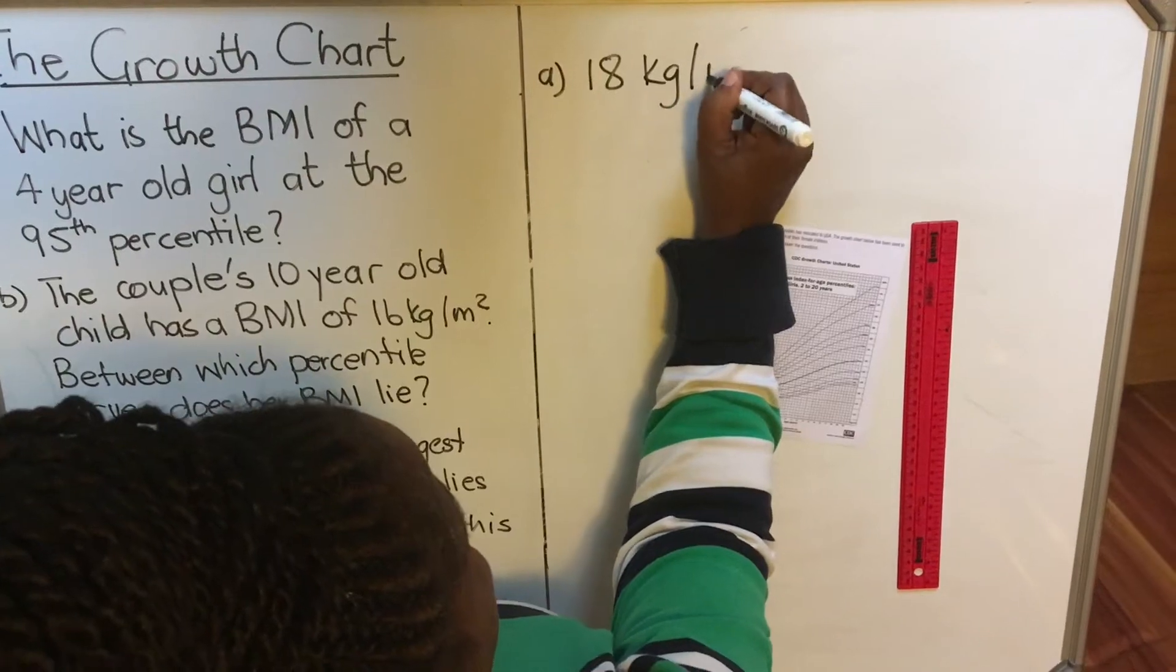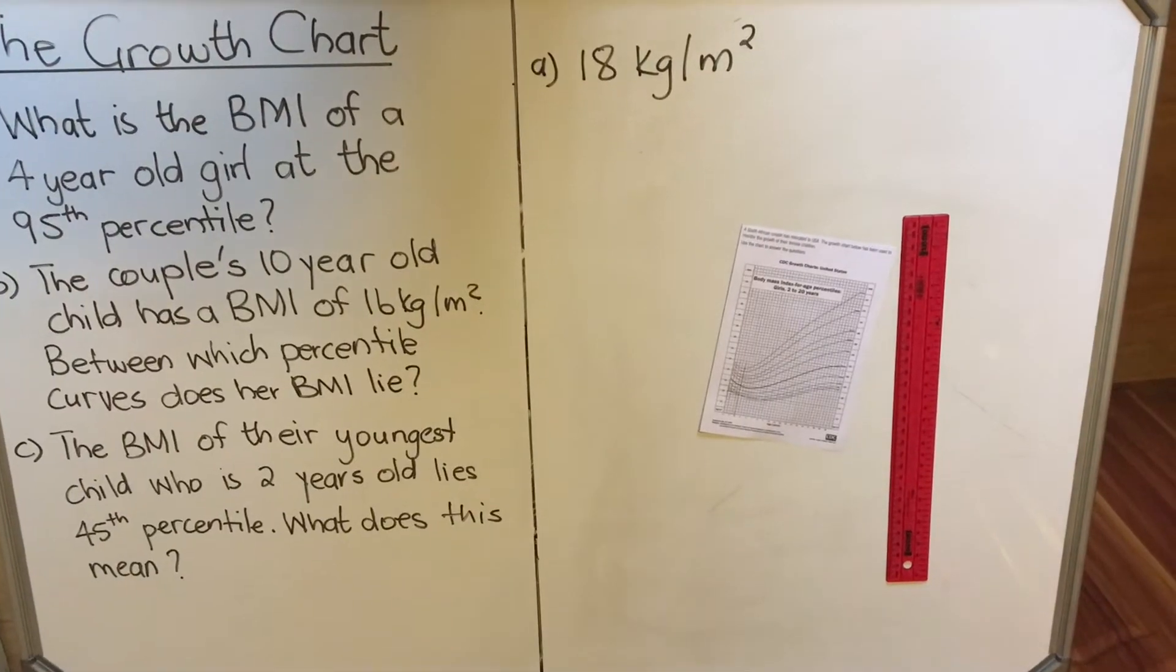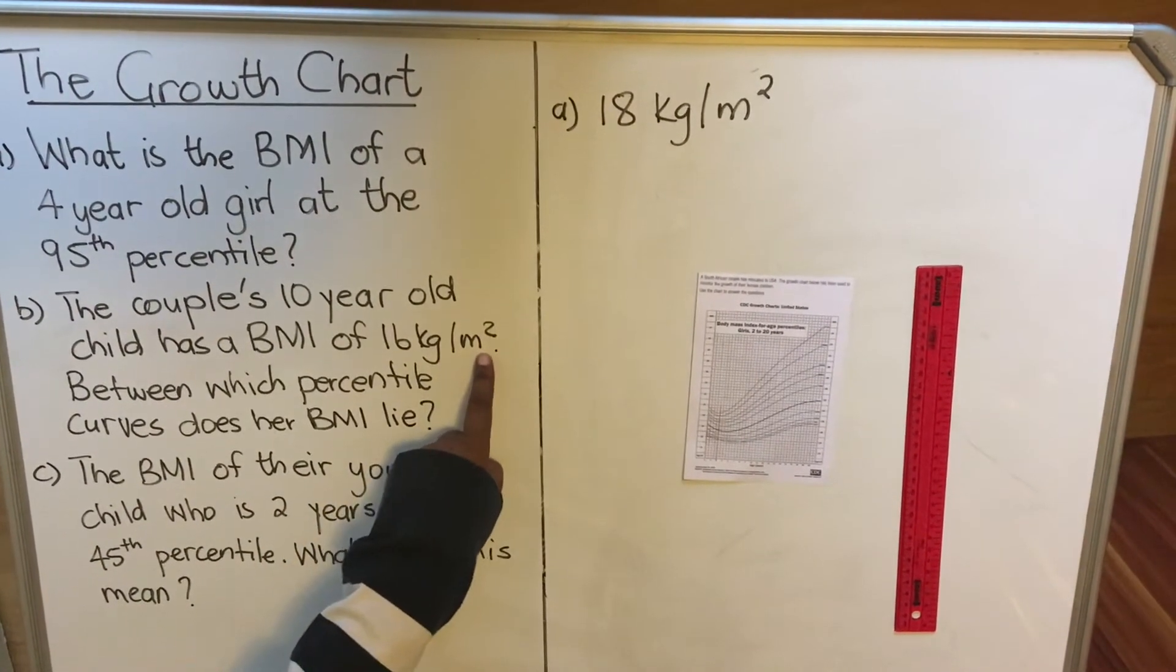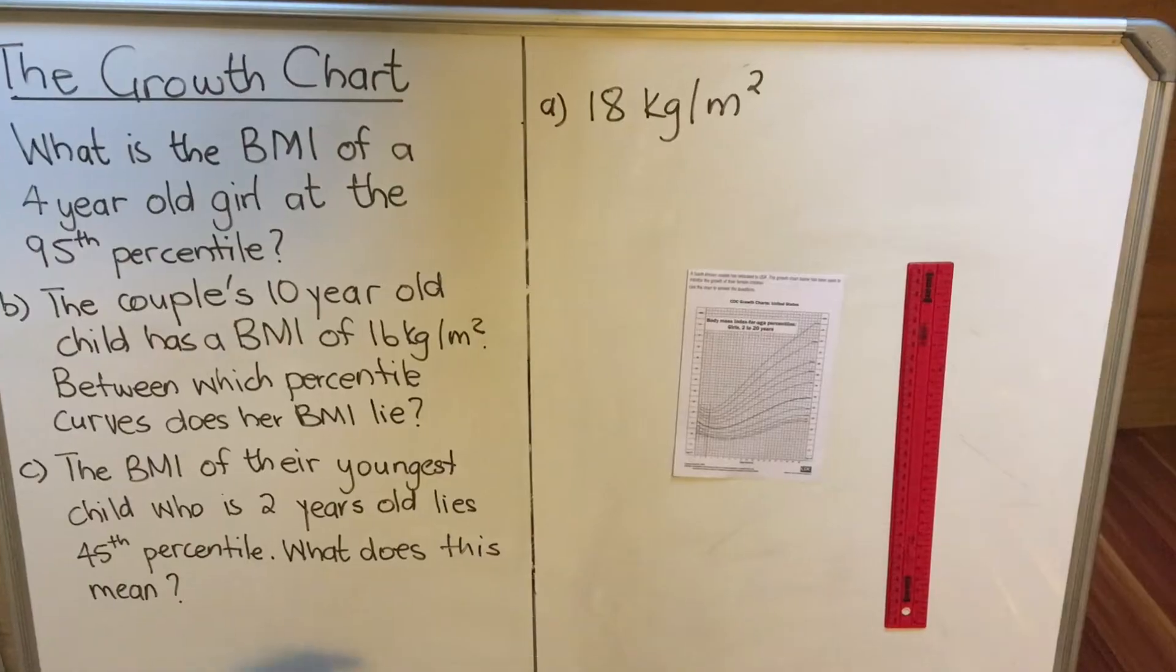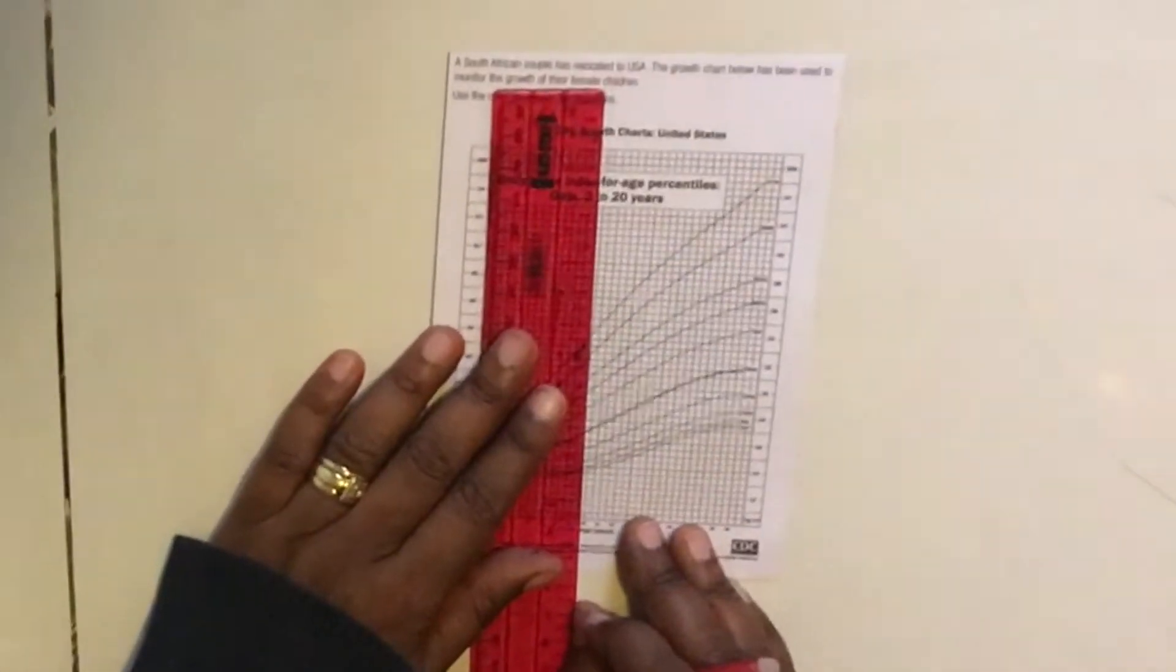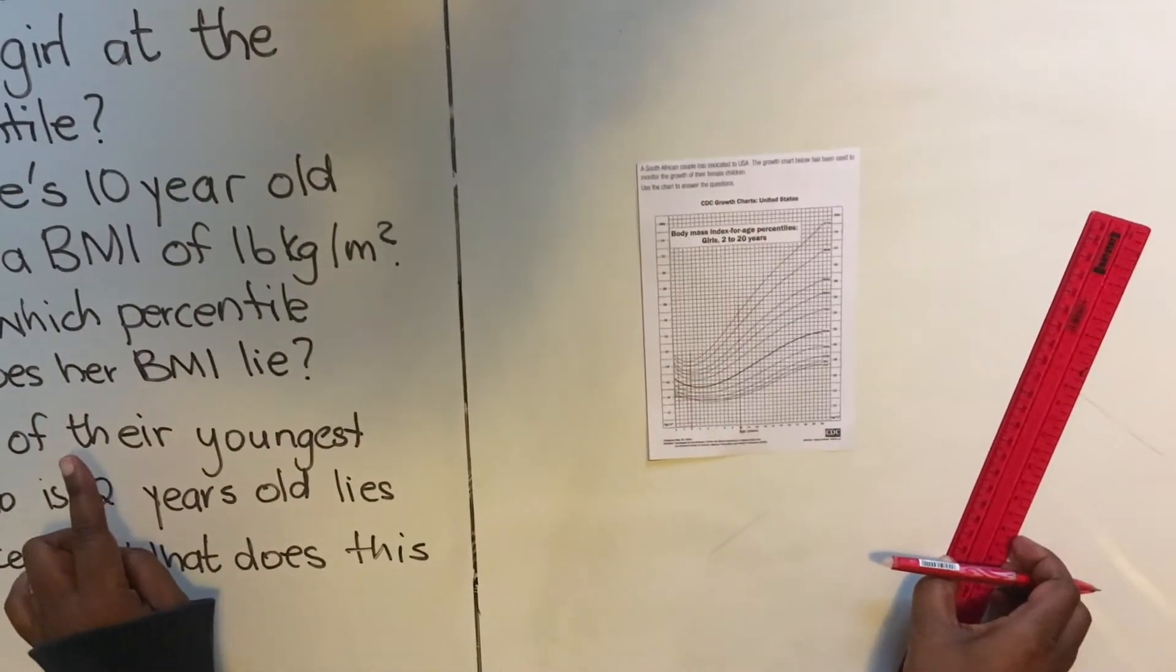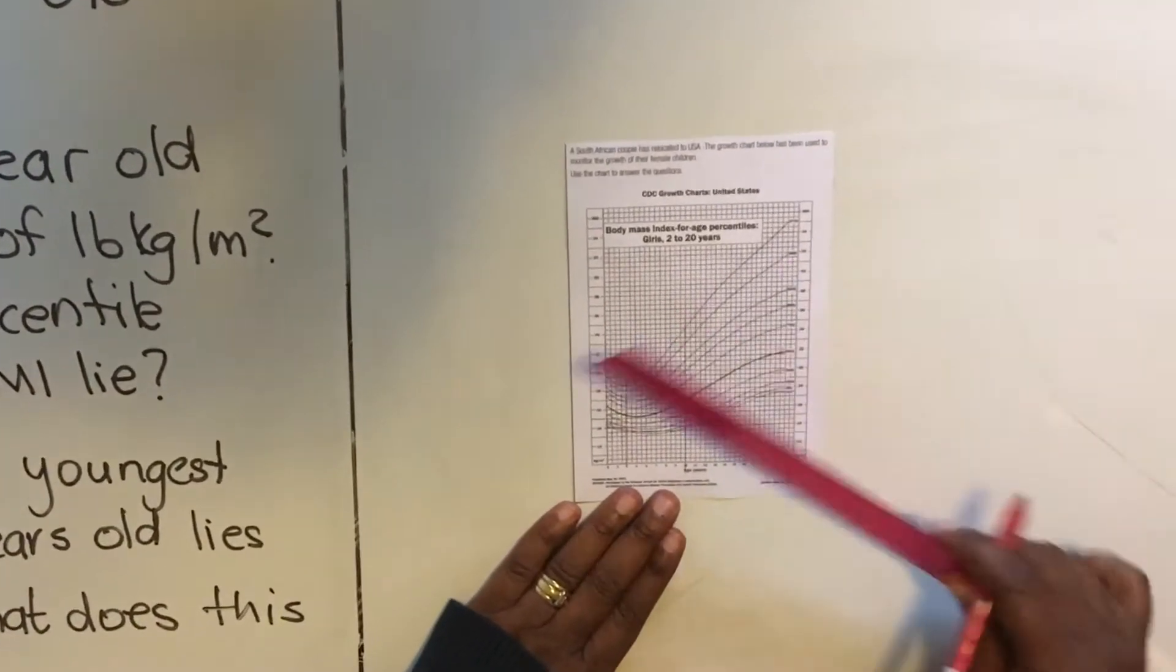So it means my answer for the first question, the BMI of a four-year-old will be 18 kilogram per meter squared. You remember the units for BMI is kilogram per meter squared. Let's look at the next question. The couple's 10-year-old has a body mass index of 16 kilogram per meter squared. Between which percentile curves does her body mass index lie? So this one is 10 years old. We'll go and find 10 years at the bottom, like this, 10 years.